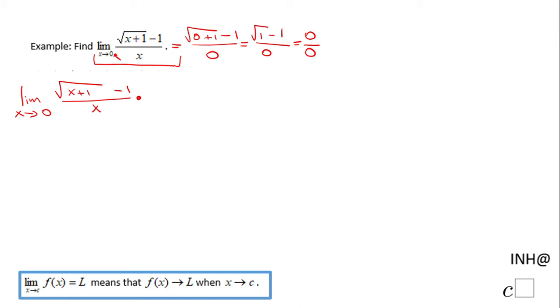I'm going to multiply this given expression by square root of x plus 1 plus 1. You notice we change the sign - it's the conjugate of the numerator. And the denominator has to be the same. This expression represents 1, and whenever you multiply by 1, you change nothing. Now let's see what we get.